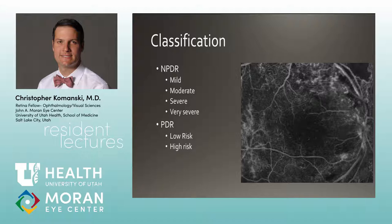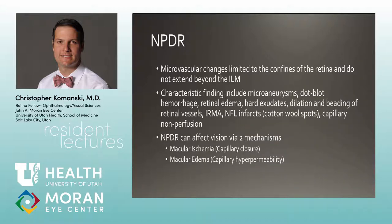The classification of diabetic retinopathy: non-proliferative diabetic retinopathy (NPDR) can be mild, moderate, severe, or very severe; proliferative diabetic retinopathy (PDR) is classified as low-risk or high-risk. In NPDR, microvascular changes are limited to within the retina and never extend beyond the ILM. The earliest finding is microaneurysms, progressing to dot-blot hemorrhages, retinal edema, hard exudates, dilation and beading of retinal vessels, and IRMA — which is like neovascularization but doesn't break through the ILM.